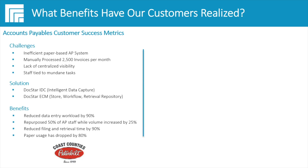The customer had about six AP staff when they started, and they repurposed 50 percent of that staff while their volume actually increased by about 25 percent over time. The key word is repurposed — employees were redeployed to other functions within the organization. They also reduced filing and retrieval time by 90 percent by moving from paper to electronic information assets in DocStar's ECM repository, and paper usage dropped by about 80 percent.